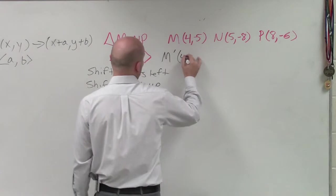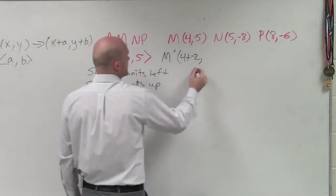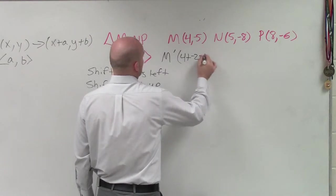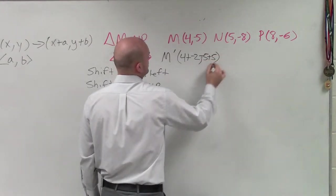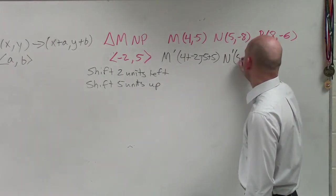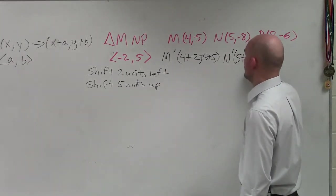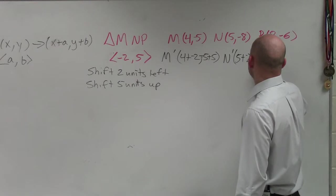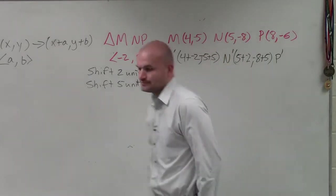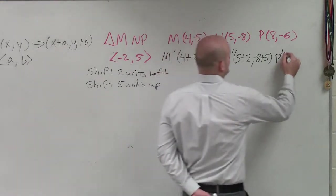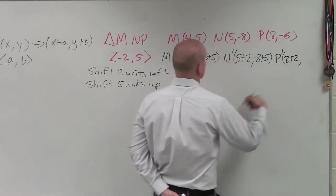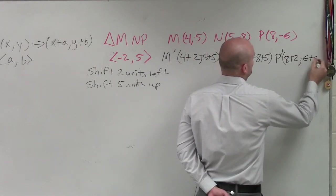So in this case, I'll have 4 plus negative 2 comma negative 5 plus 5. Then N prime is going to be 5 plus negative 2, and then negative 8 plus 5. And then P prime is going to be 8 plus negative 2 comma negative 6 plus 5.